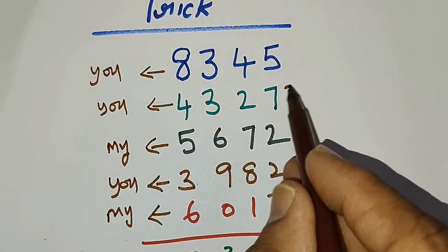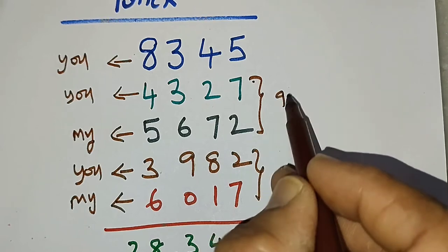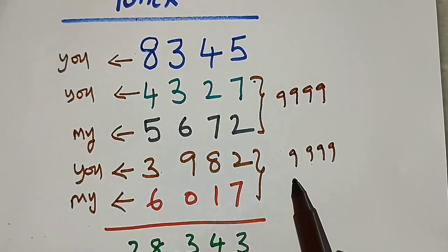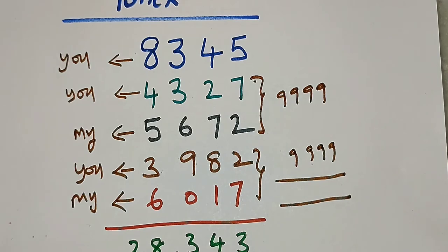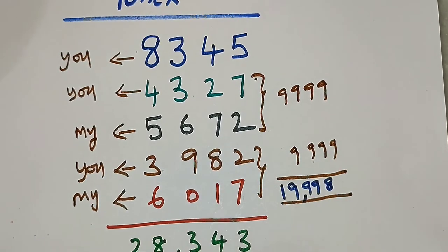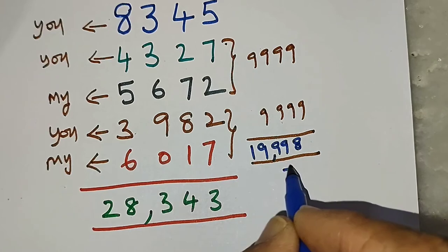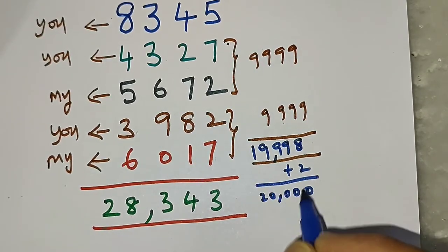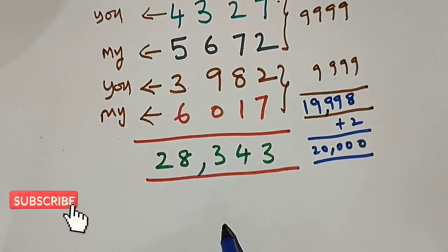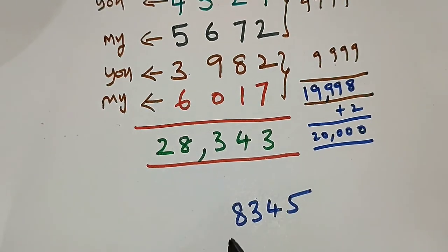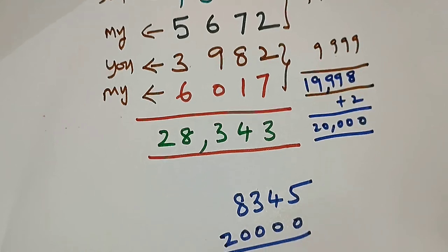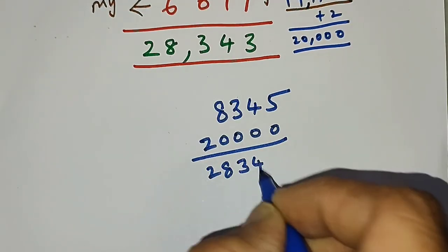Immediately I wrote another number using the same procedure — the total of each digit pair must equal 9: 9−3=6, 9−9=0, 9−8=1, 9−2=7, giving 6017. So the secret behind this is: if you add these two pairs of numbers you get 9999 each time. Adding both pairs gives 19,998, which is just 2 short of 20,000. The first number you wrote was 8345.